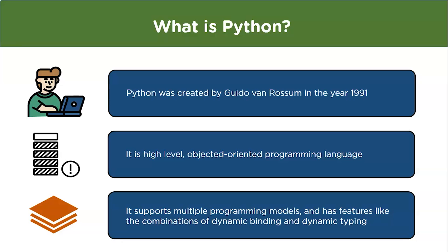Python is a high-level, object-oriented programming language. From the very beginning, one of the main intents was that it should be easy to read, simple to understand and use. Python is known for its easy and simple learning experience, and it supports multiple programming models including procedural, object-oriented, and functional programming.